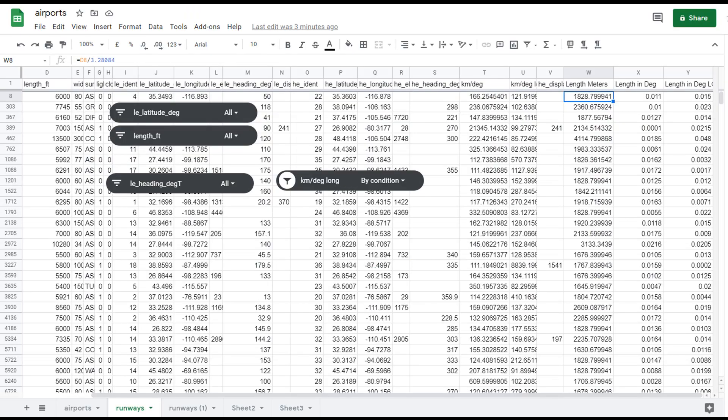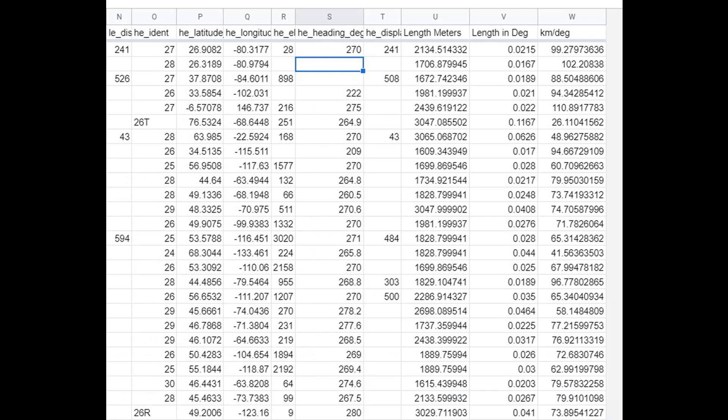So by subtracting the longitude at one end from the longitude at the other gave me how long the runway is in degrees. Next I calculated the kilometers per degree ratio. Now we all know that at the equator it's 69 nautical miles per degree or 111 kilometers per degree.